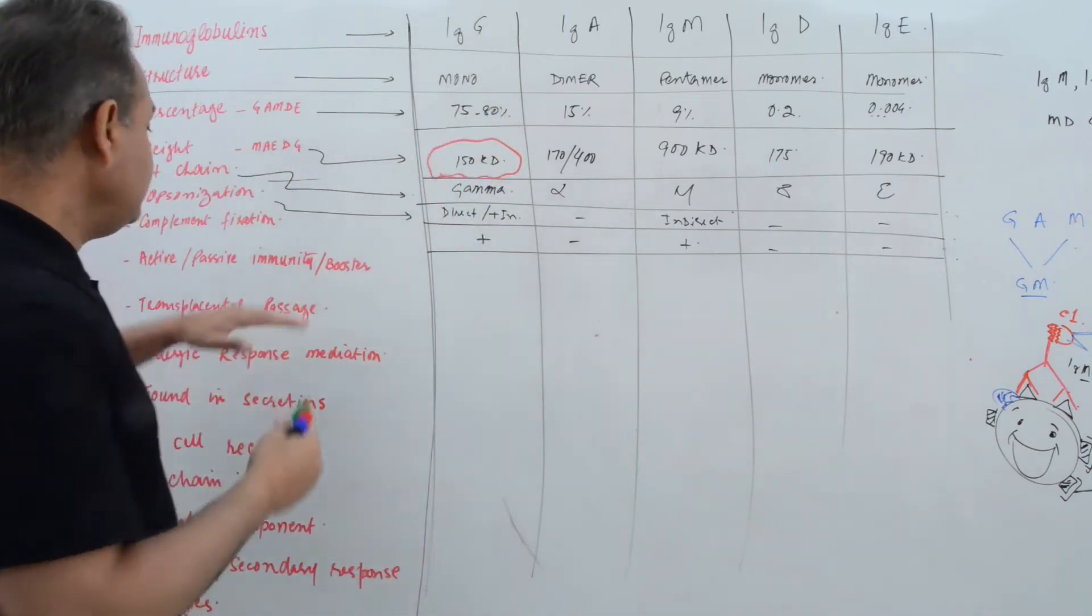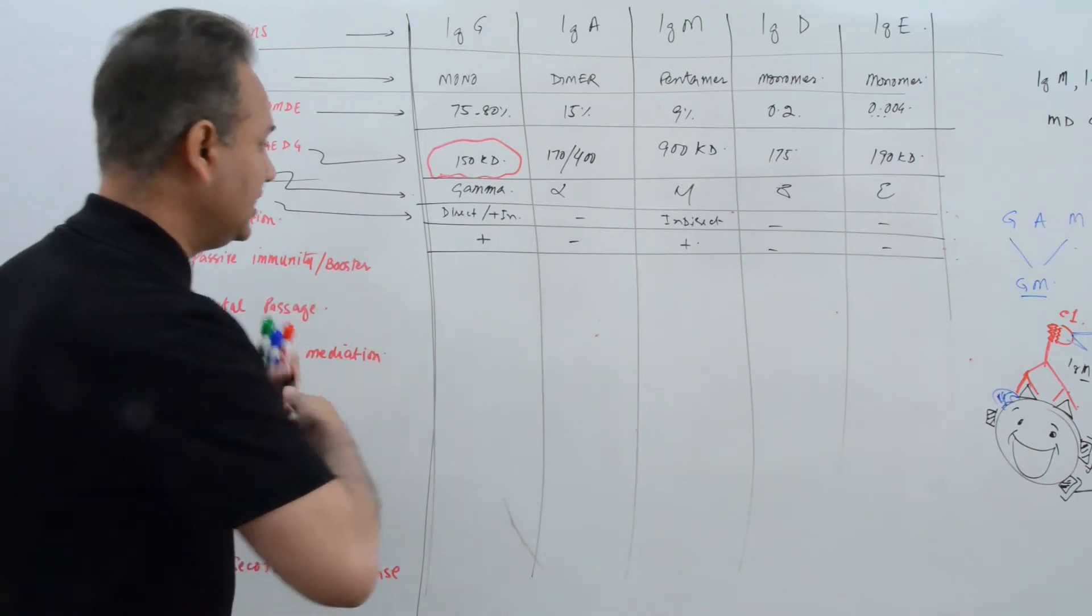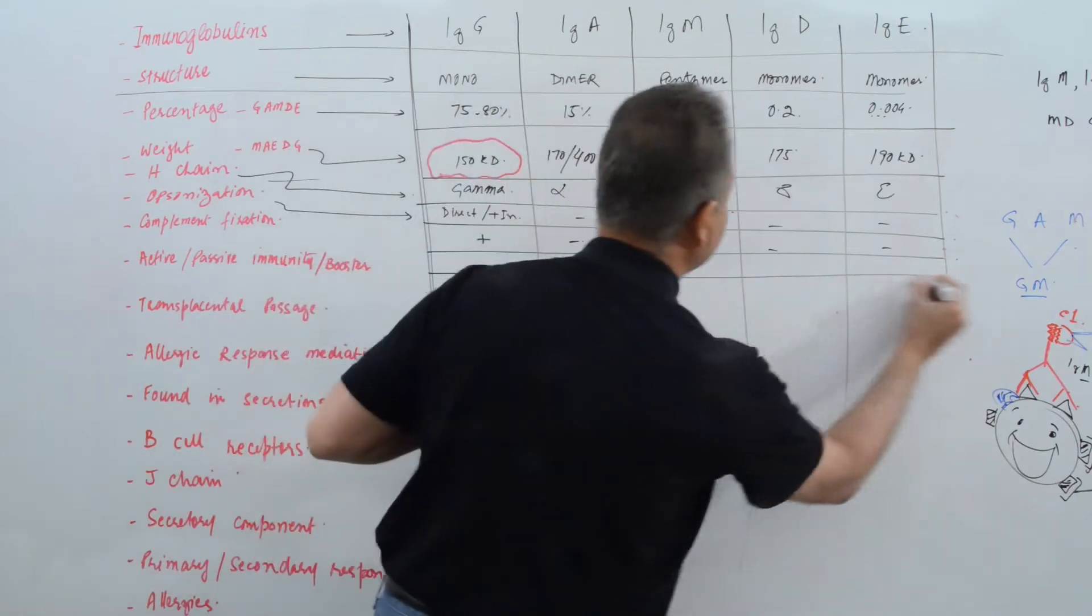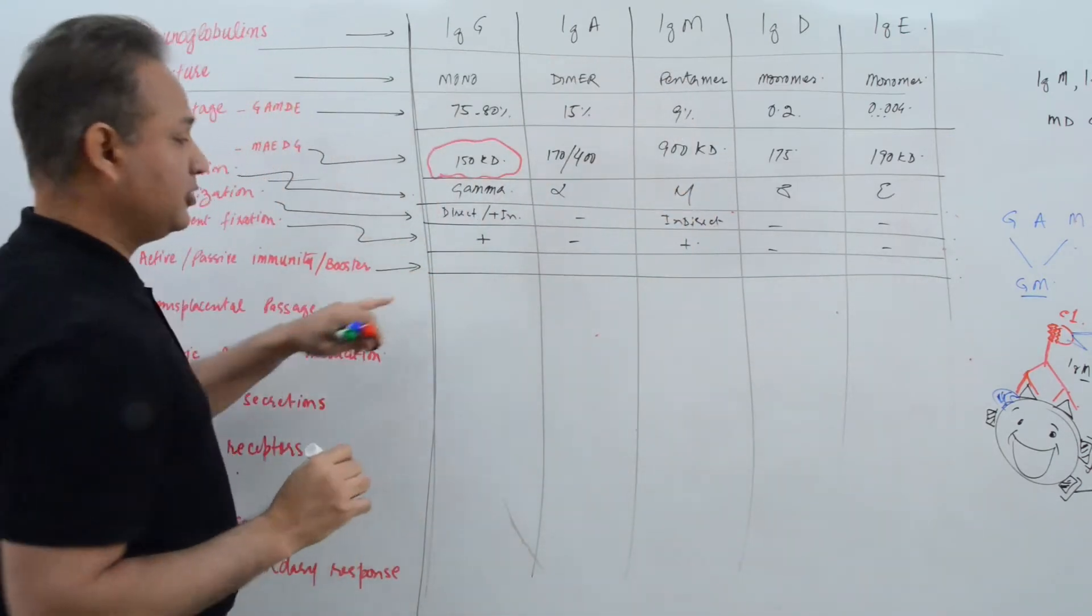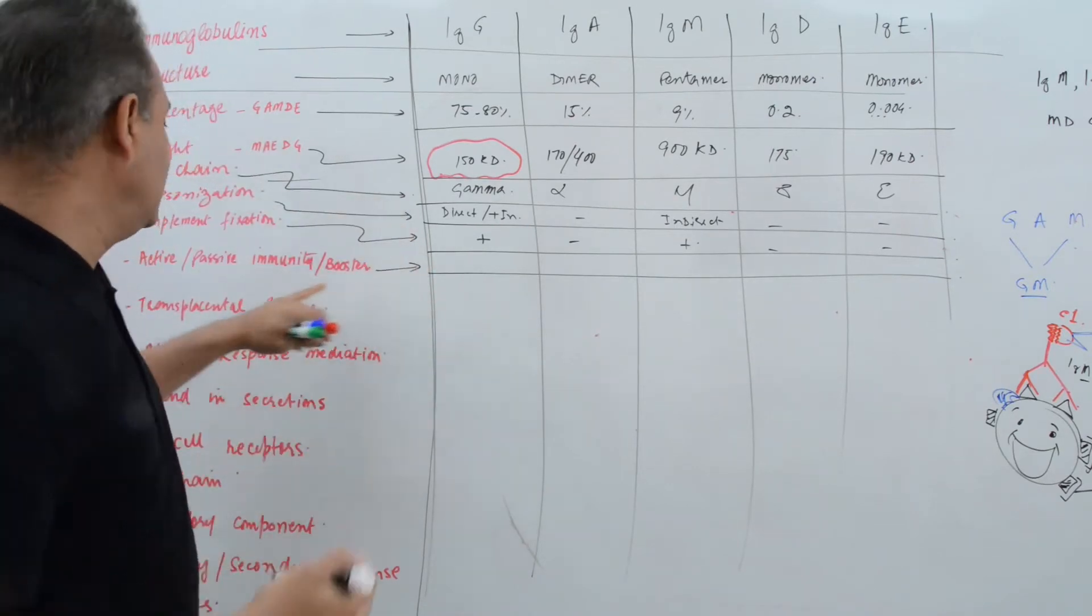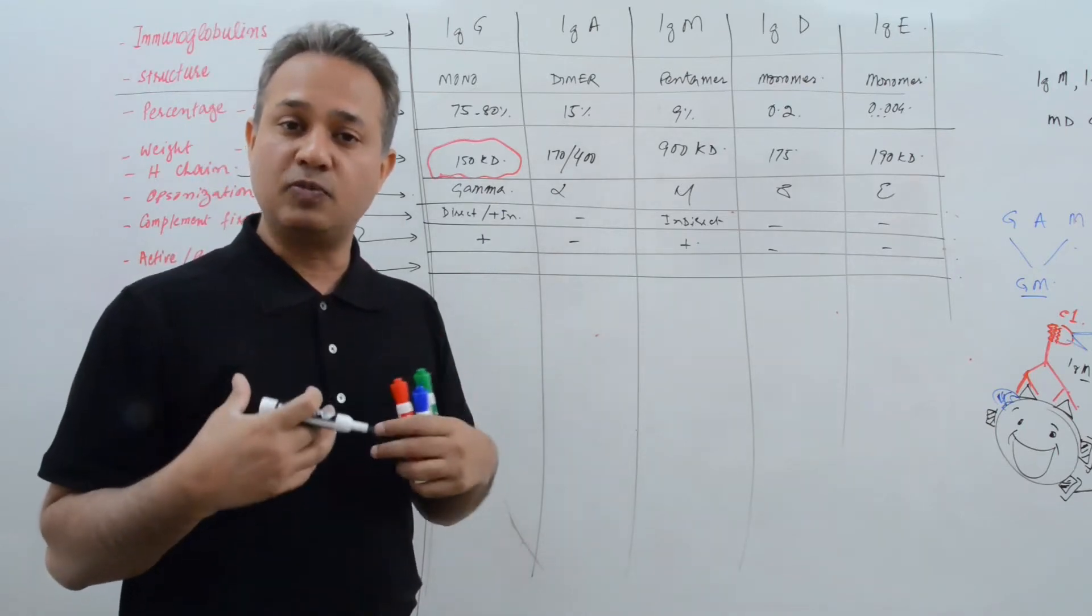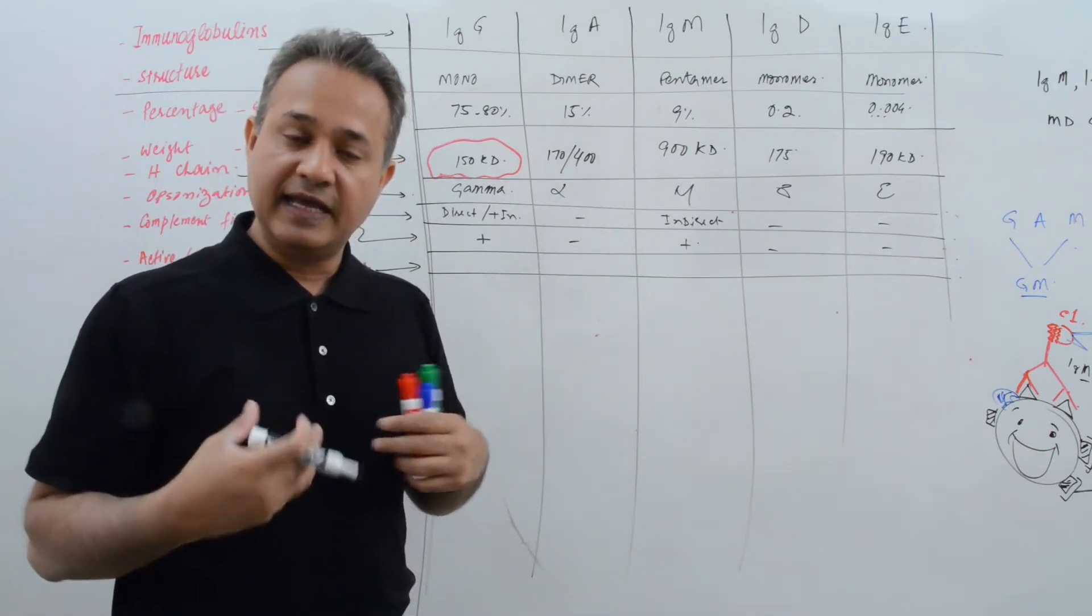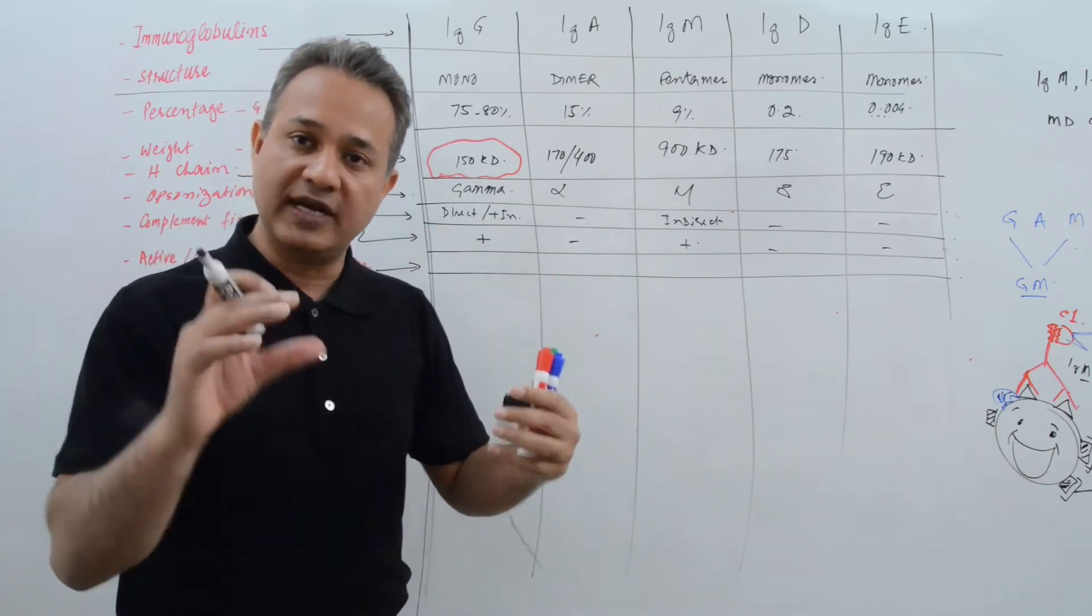So now active and passive immunity. Let's talk about that very quickly. This is part of vaccinations as well, so we'll talk there too.